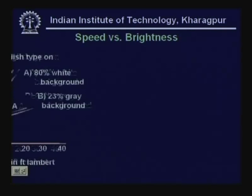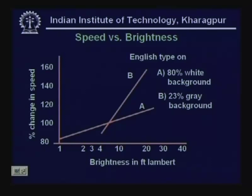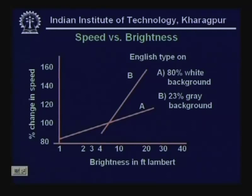Another look at reading speed versus brightness: curve A represents an 80% white background and curve B a 23% grey background. With a white background and standard English text, the percentage change in speed is not large with increasing brightness. With a grey background, however, there is a rapid increase in reading speed — if it is 100% at 10 foot lamberts, it rises to close to 160% at 20 foot lamberts.